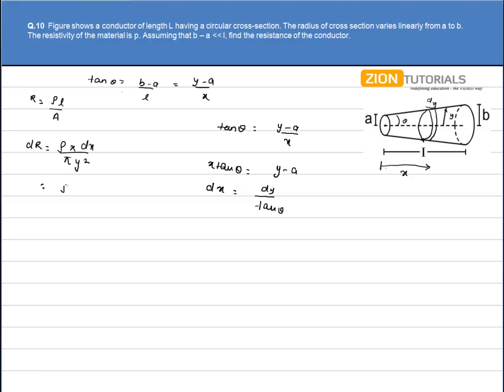So I have ρ by π, dy by y², into 1 by tan theta. That is our dR.